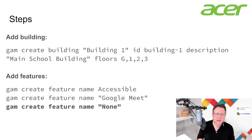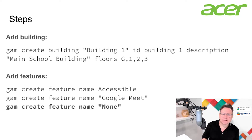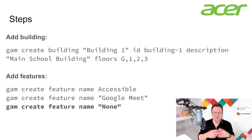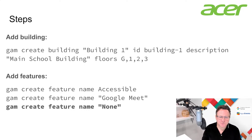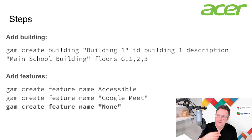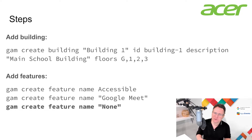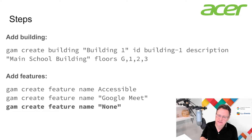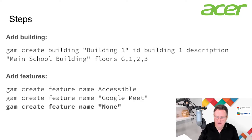I'm also going to add some features — these are the features I want available in the rooms, such as whether the room is accessible or whether Google Meet is available for video conferencing. One helpful thing to point out is that it's useful to have a feature called None, meaning there's no resource available in that room. This is helpful when using batch commands later, so you don't get an error.